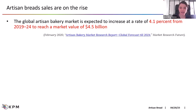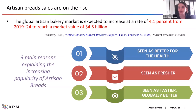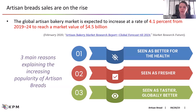The global artisan bakery market is expected to increase a lot in the next few years. This is mainly due to two different parameters, but mostly because artisan breads are seen as better for health — they are usually clean label, lean formulation, not too much fat or sugar. They are also usually fresher, and as you know, they have a unique taste and texture. So this is a very popular product.